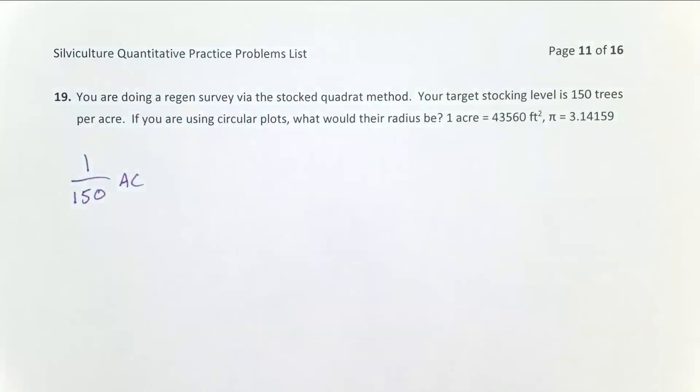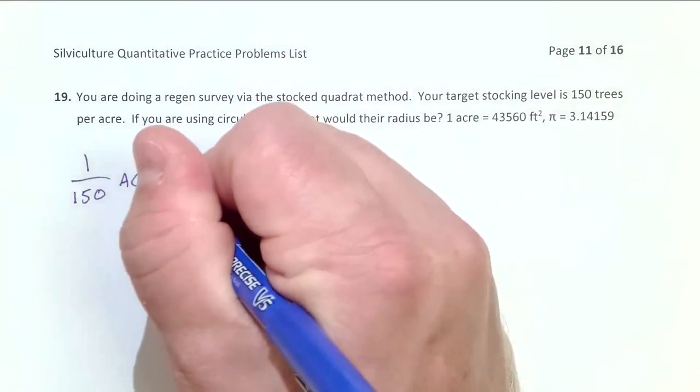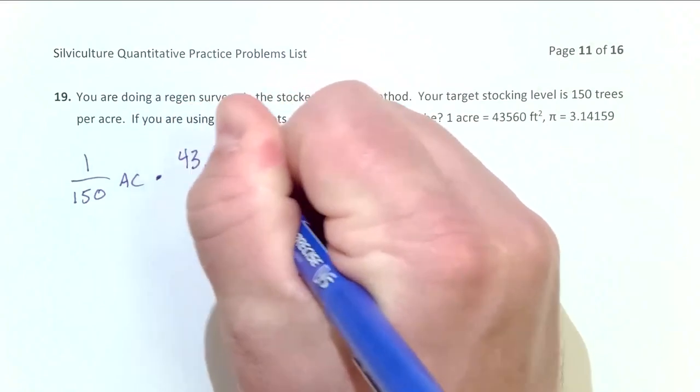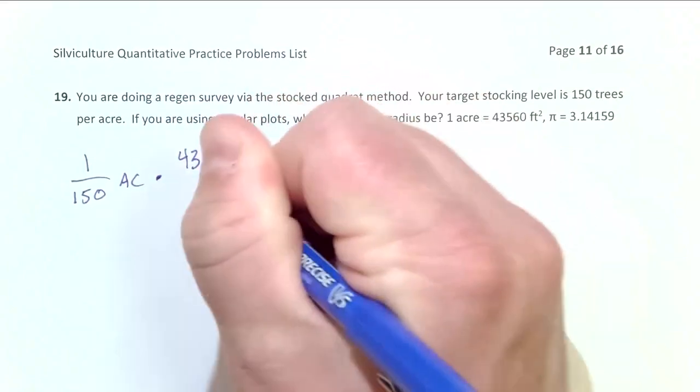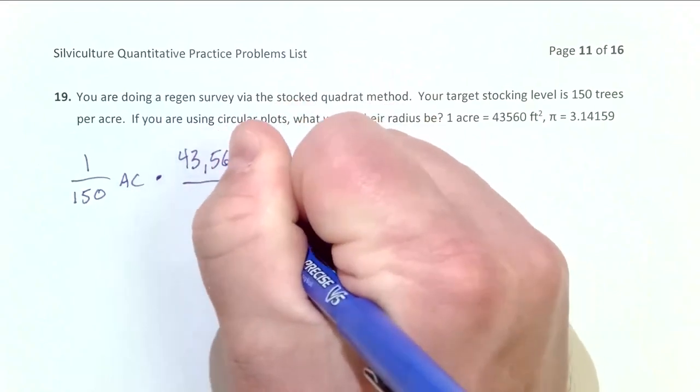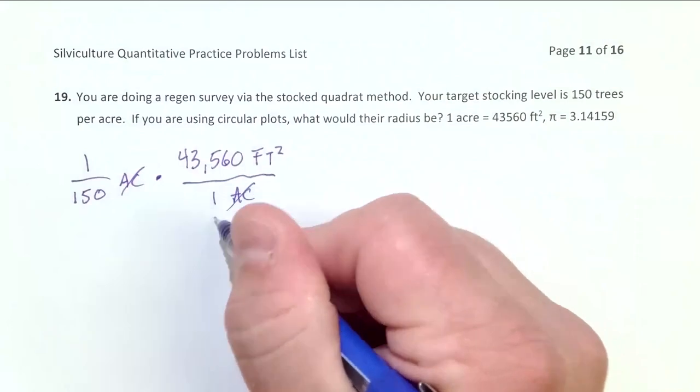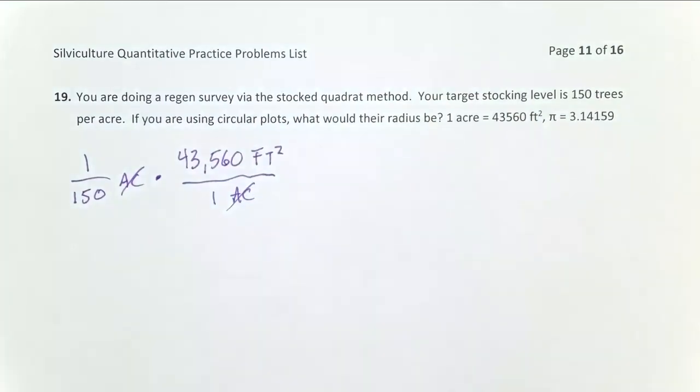So I simply need to convert this to square feet now. So 43,560 feet squared in one acre. I look at my units and they cancel out acres, acres. And so I'm left with square feet there.